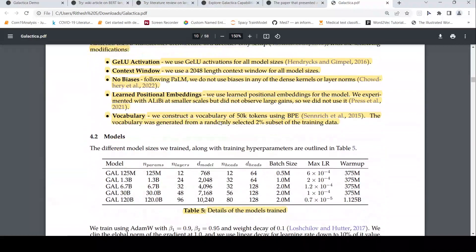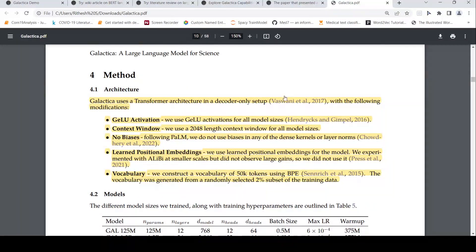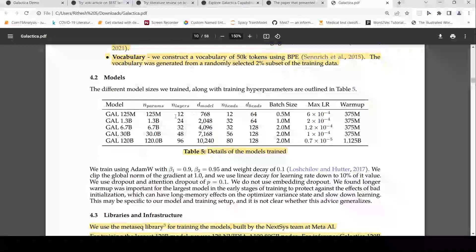And the kind of architecture they have used is the transformer architecture with decoder only step as in the original paper and with some modifications like they have GALU activations for all models, some context window of 2048 length context, no biases, learned positional embedding. They use learned positional embeddings for the model. Some details they have given over here and vocabulary is 50k tokens using byte pair encoding. The vocabulary was generated from a randomly selected 2% subset of the training data. So these are the different models.